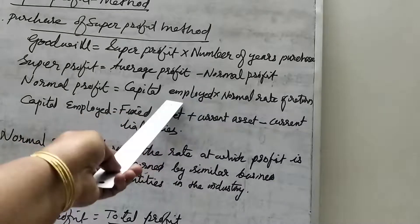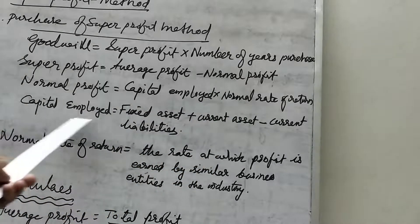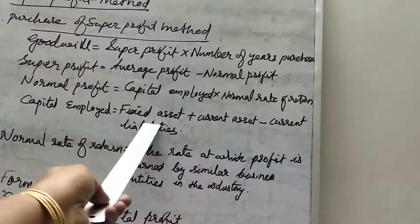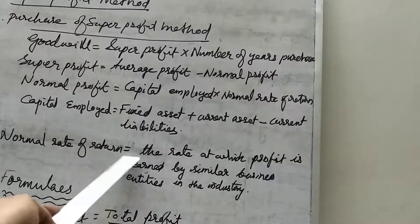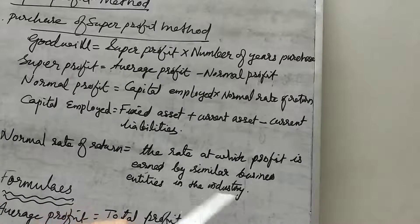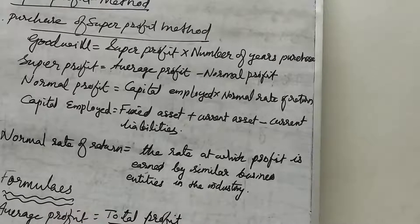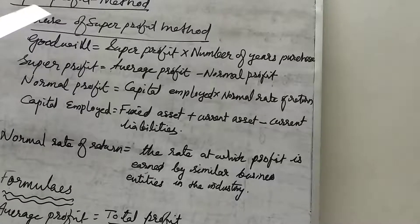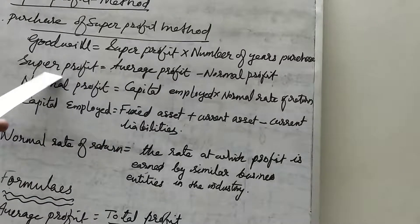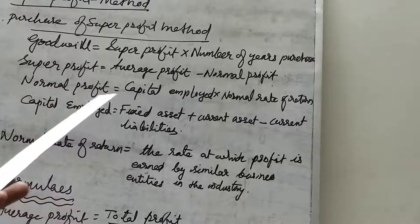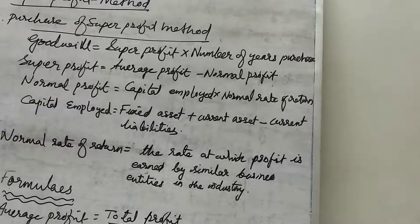To find out normal profit, normal profit is equal to capital employed multiplied by normal rate of return. Capital employed is equal to fixed assets plus current assets minus current liabilities. Normal rate of return is the rate at which the profit is earned by similar business entities in the same type of industry. So these are the various formulas to find out the value of goodwill under the purchase of super profit method.